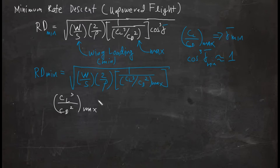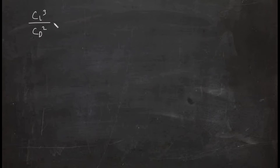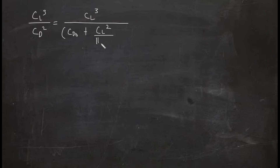We will apply the drag polar equation: CD = CDo + CL²/(πAe). Similar to what we did in the previous video, we first set up the ratio CL³/CD²: that is CL³ divided by (CDo + CL²/(πAe))².